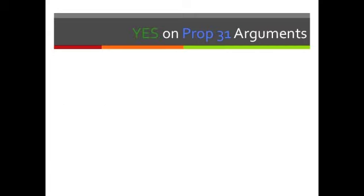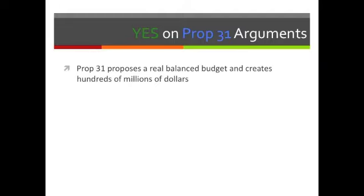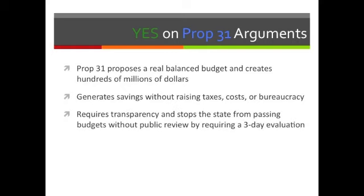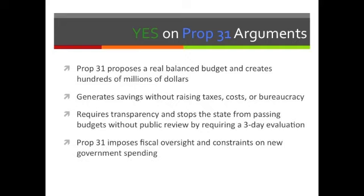The proponents of Prop 31 say: In good times and bad, California has long had a state budget deficit. Politicians overspend, typically resulting in waste, abuse, and over-borrowing. Budgets are often based on special interest influence rather than outcomes Californians want. An auditor estimated California could have saved about 1.2 billion dollars had proposals to reform operations and improve efficiency been enacted. Prop 31 requires transparency and stops the state from passing budgets without public review by requiring a three-day evaluation period before a vote.